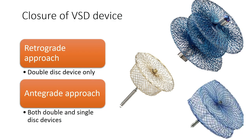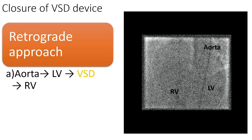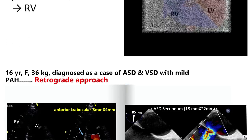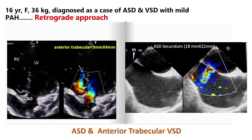What is the modality — should we approach retrograde or antegrade? In retrograde, we always use a double disc device; in antegrade, both double and single disc devices can be used. Retrograde is my preferred approach as it is less time-consuming and less complicated, but we have to consider the age, weight of the baby, and the morphology. In retrograde fashion, we take the delivery sheath, advance it to the LV, cross the VSD, and close the device. This is our experience over 16 years.